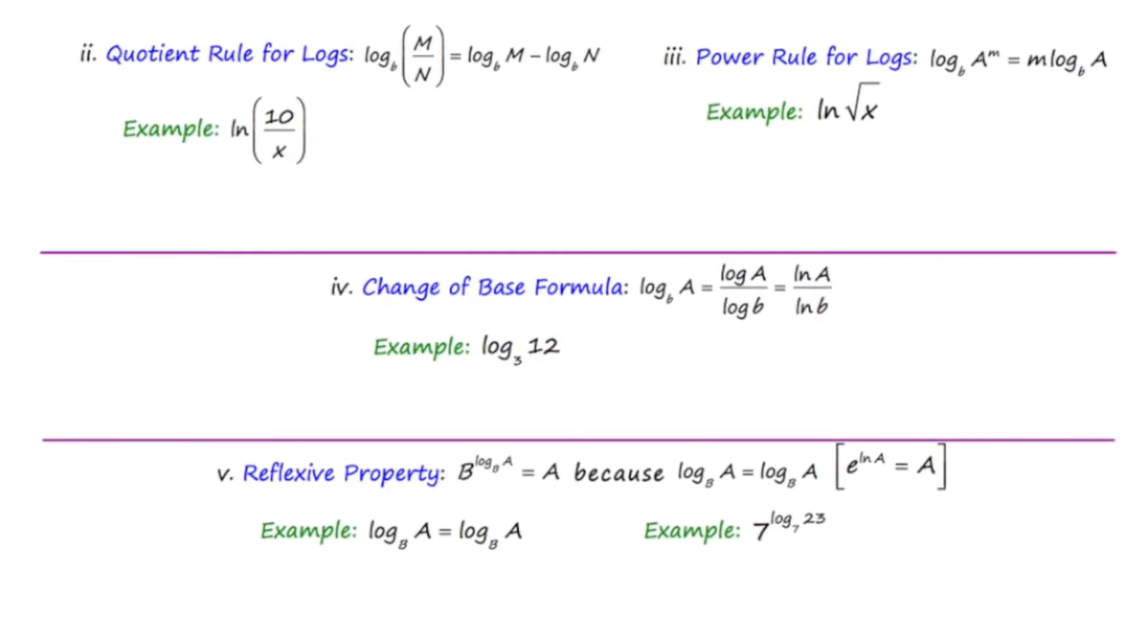Okay, now that we're on slide number two, we're going to continue to look at some of the properties. The next property of logs that we're going to look at is the quotient rule for logs. And what this rule says is that if you're taking the log of a quotient, it's going to be the log of the numerator minus the log of the denominator. And what's important here is the fact that it's going to be a minus in between.